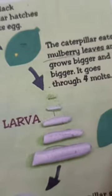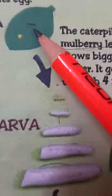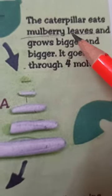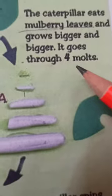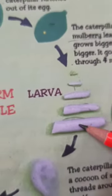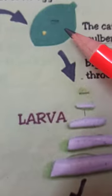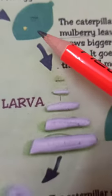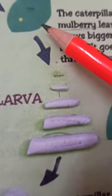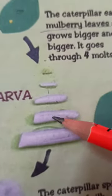From each egg, a small caterpillar comes out. This stage is called the larva. The caterpillar eats mulberry leaves and grows bigger and bigger. It goes through four molts — four stages. When this caterpillar comes out from the egg, it feeds continuously on mulberry leaves.